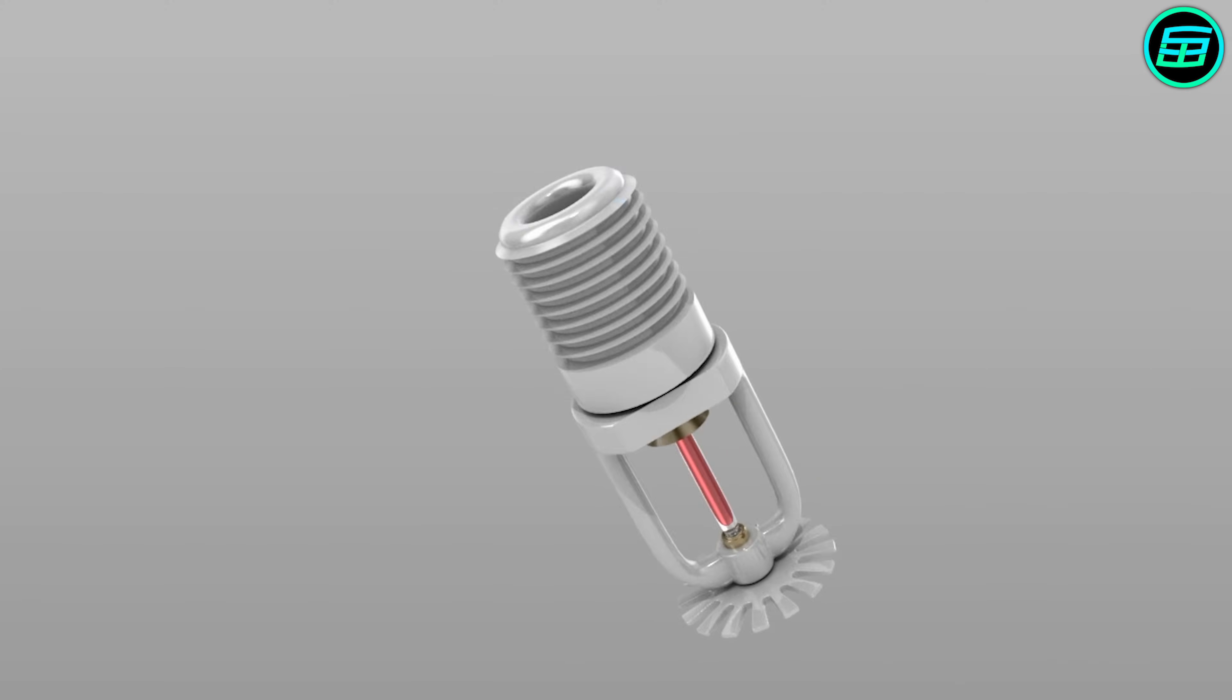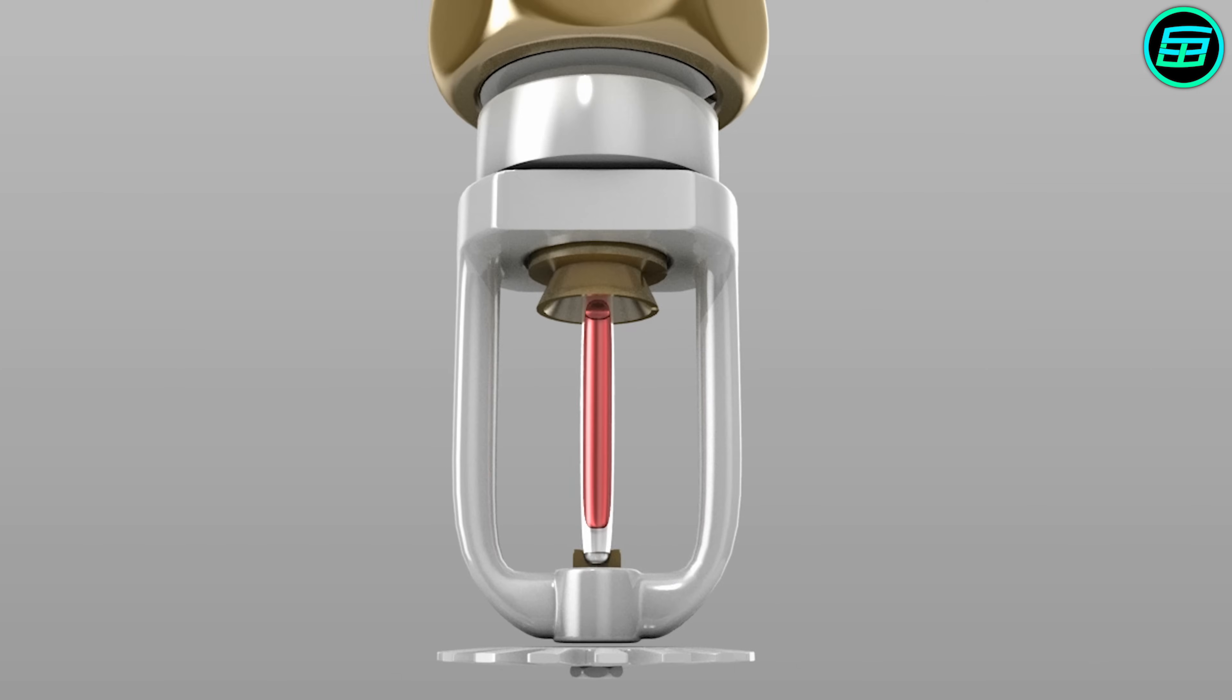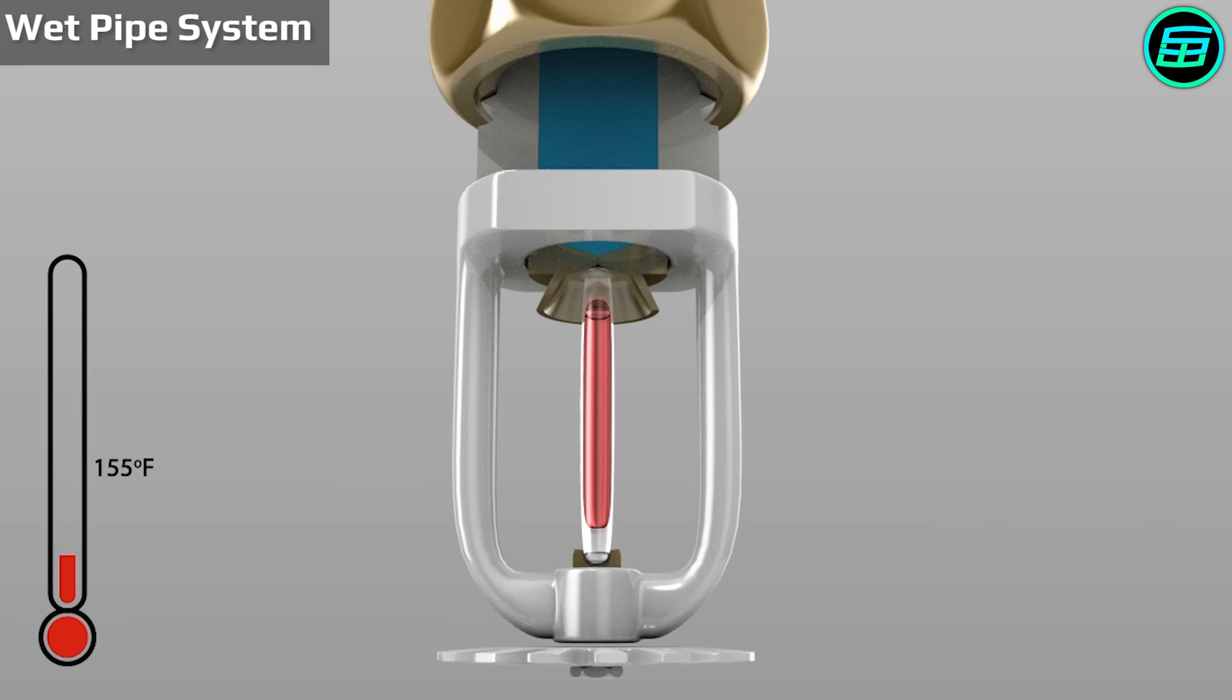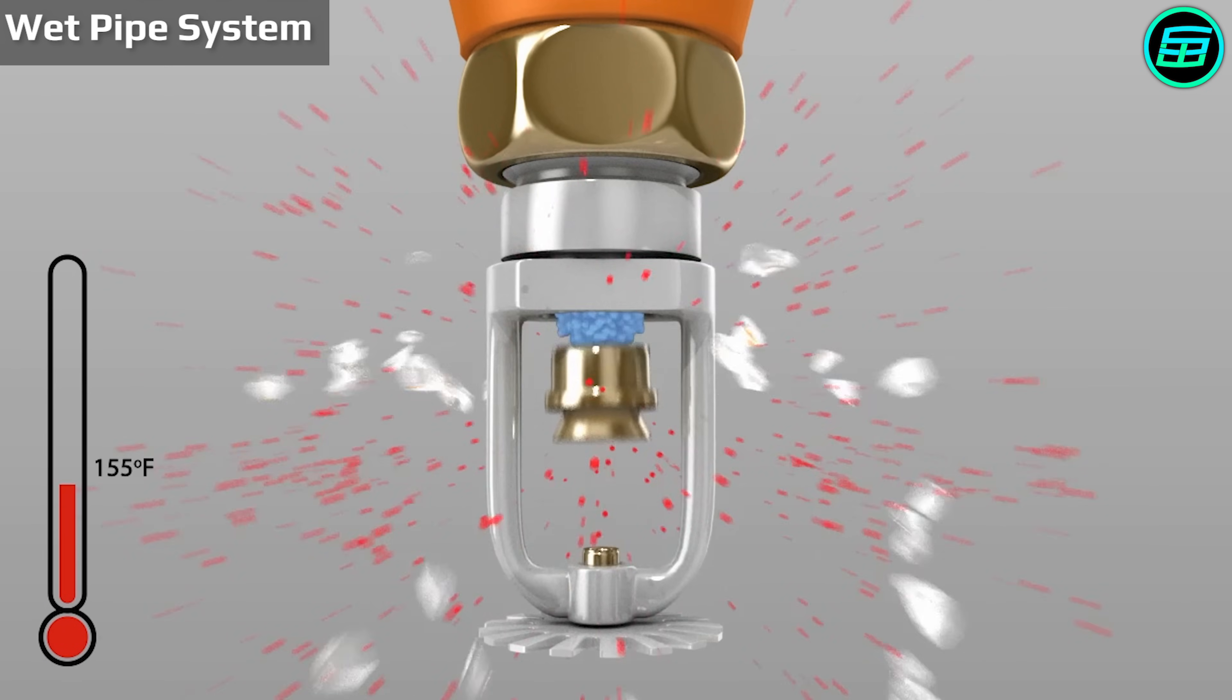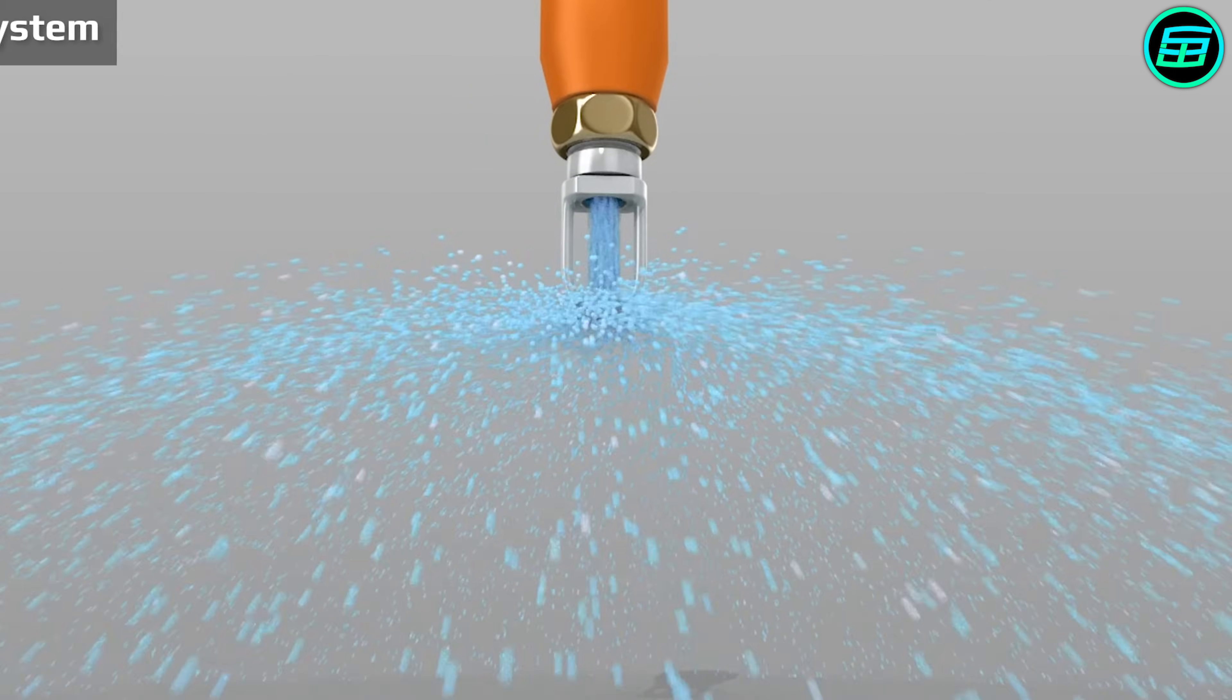Fire sprinkler systems operate in different ways as well. The type we've just explained is known as a wet pipe system and is the commonest in use. Each sprinkler head is activated independently and the main goal is to reduce water damage in the event of a false alarm.